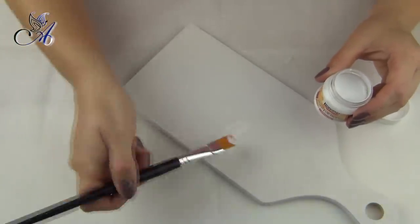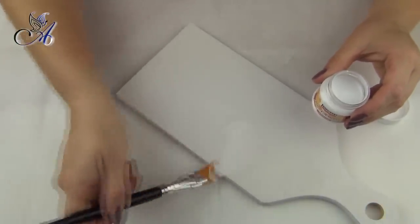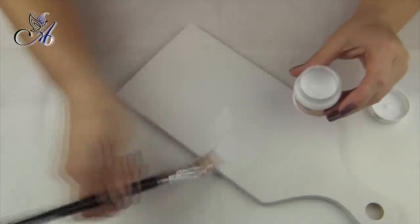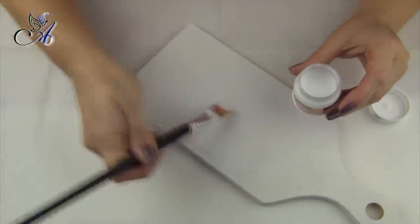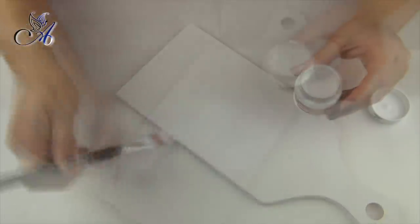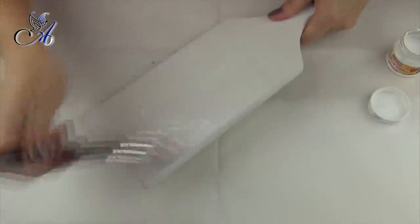Now I apply one generous coat of decoupage glue as I want to glue my napkin with iron and baking paper. Remember to dry it properly before you start next step.